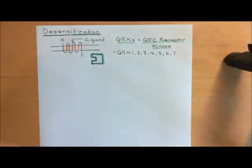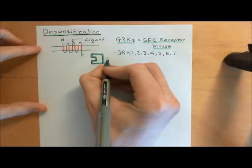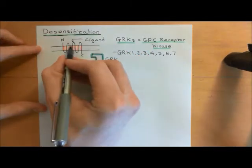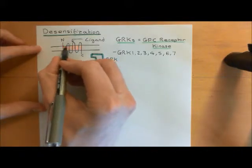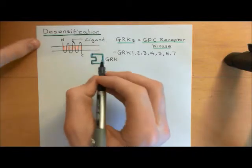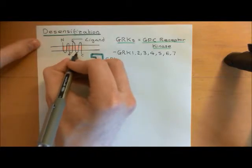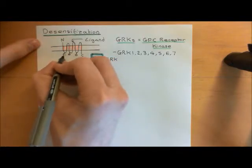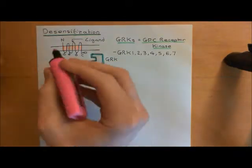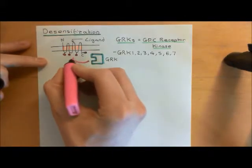They cannot phosphorylate a G-protein-coupled receptor unless it's in the on-state, i.e. unless it's got ligand bound to it. If it doesn't have ligand bound to it and it's in the off-conformation — the inactive conformation — then it won't get phosphorylated by a G-protein-coupled receptor kinase. But if it is in the on-state for too long, you're going to start getting phosphate groups added onto the intracellular domain of the G-protein-coupled receptor by these GRK enzymes.